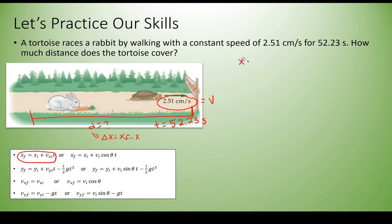So xf equals xi plus v xi t. We move this over, move this one over to the other side, so we have xf minus xi is equal to v xi t, or delta x is equal to v xi t. So that's solved for the variable that we want. We have our other piece of information. We're able to now plug and chug.